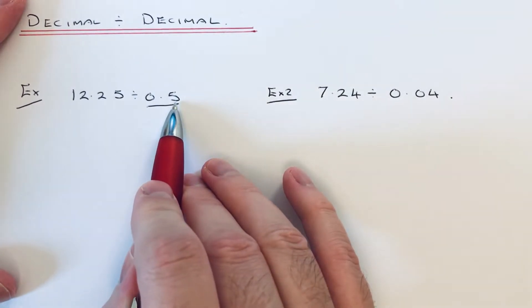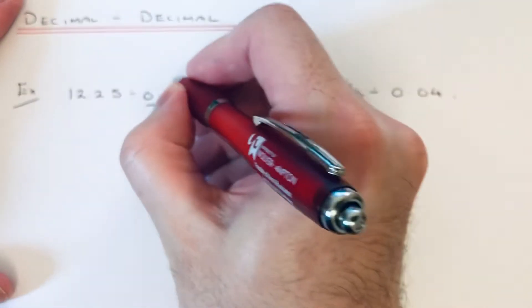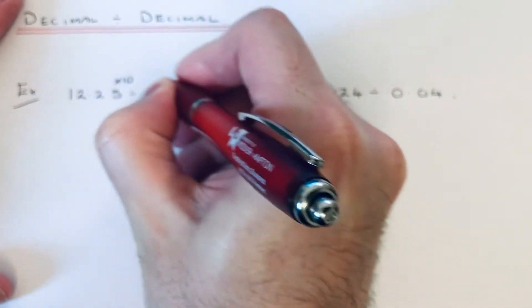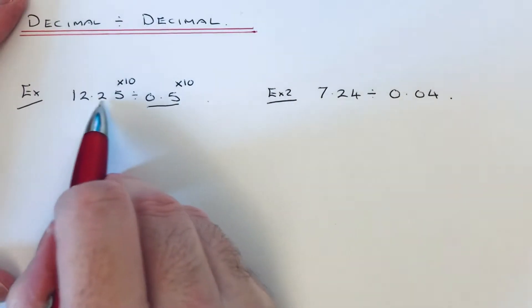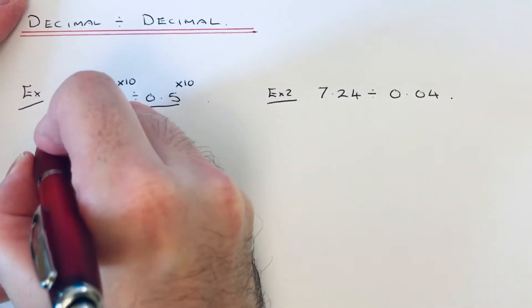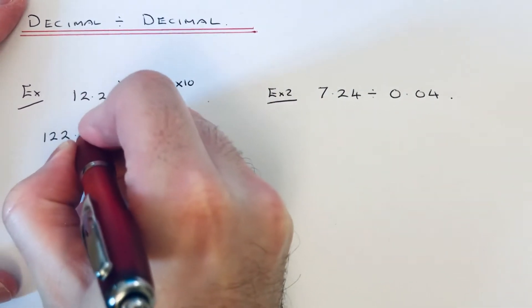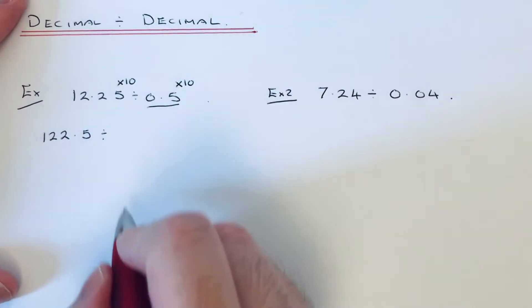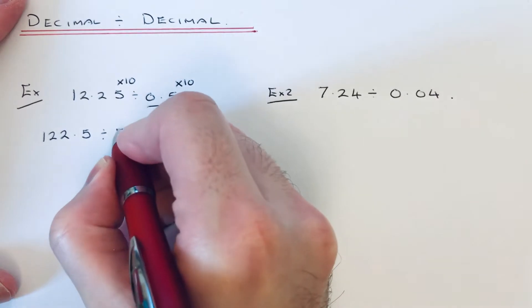Now, since there's only one digit after the decimal point, we're going to multiply both our numbers by 10. So 12.25 times 10 will be 122.5, and 0.5 times 10 gives an answer of 5.